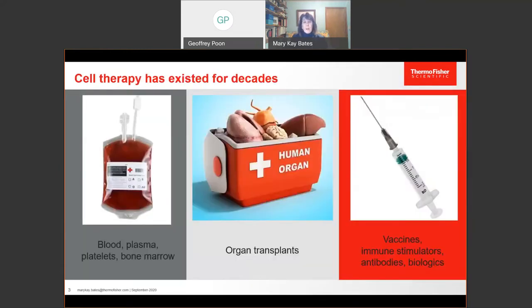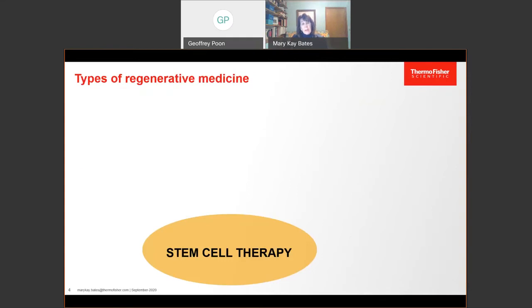While gene therapy is actually very recent, cell therapy itself has existed for decades, including blood donation, bone marrow and organ transplants, and of course vaccines, something we're all thinking a lot about today. Cytokines, antibodies, and other biologics such as insulin.